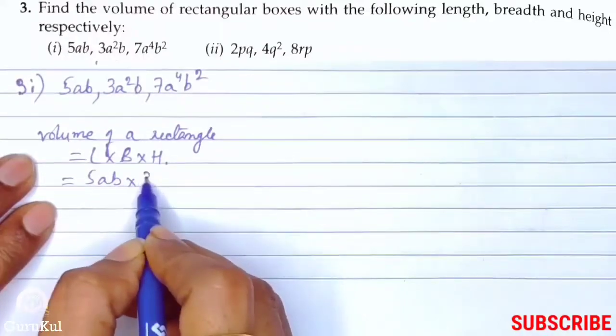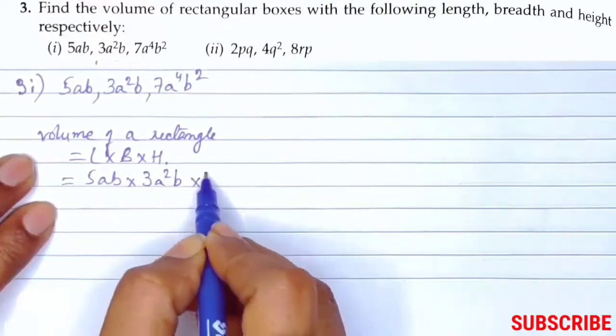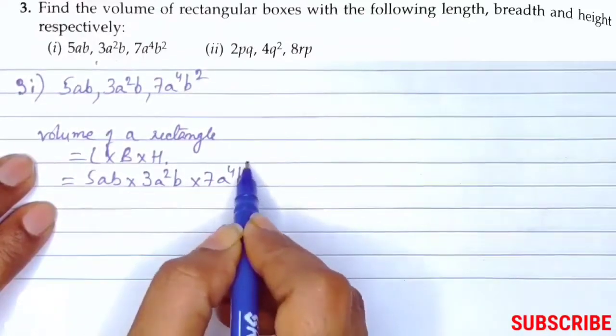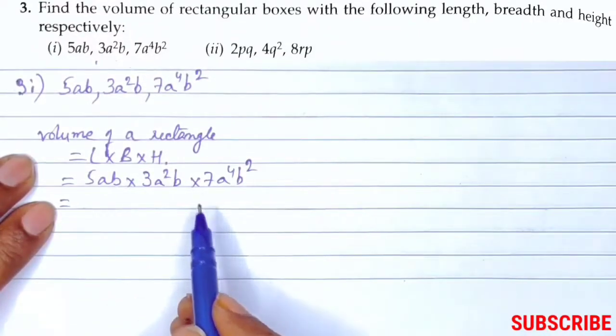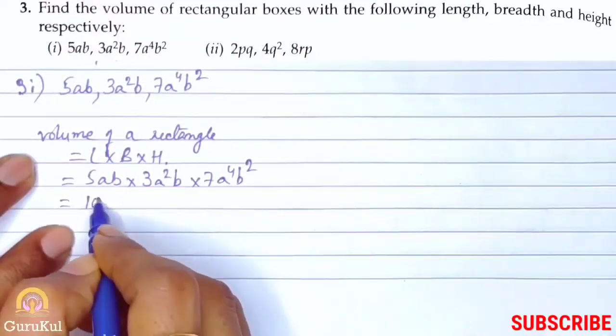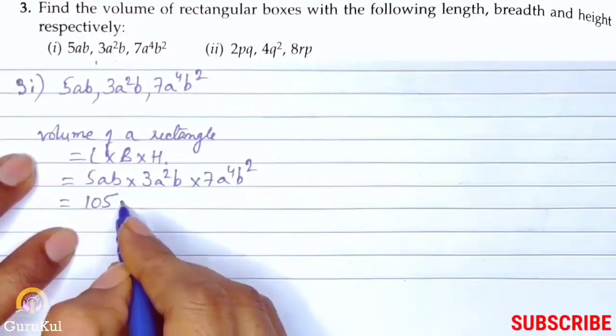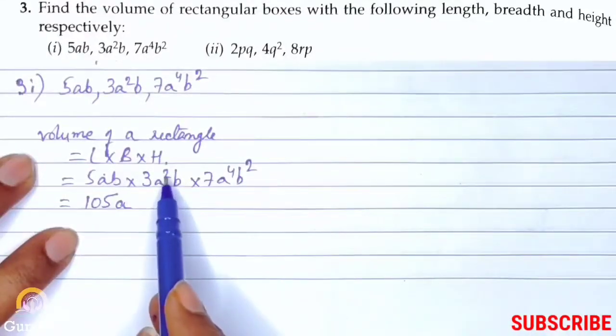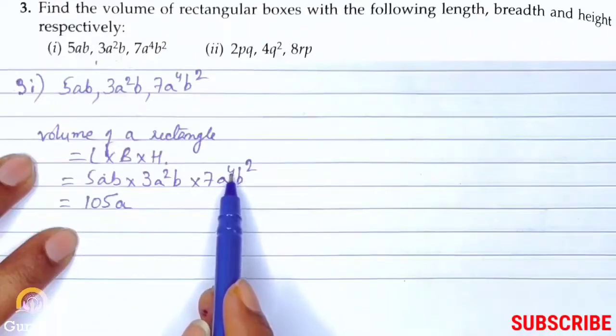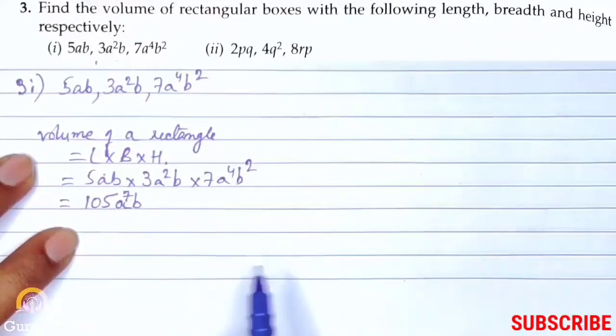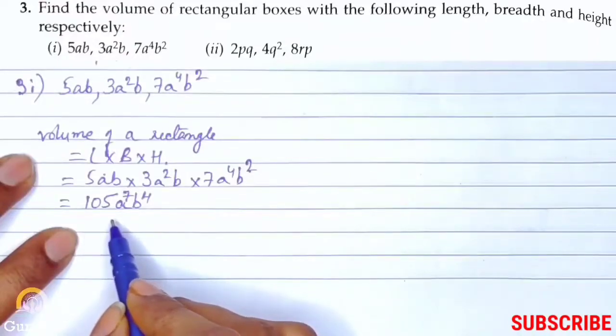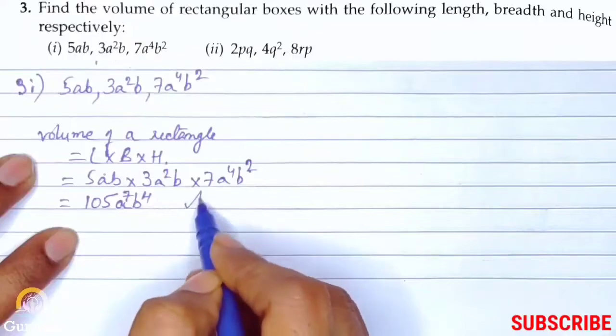Volume of a rectangle is length into breadth into height. So 5ab into 3a square b into 7a to the power 4 b to the power 2. So 5 times 3 is 15, 15 times 7 is 105. Now let's deal with a: a to the power 1, a to the power 2, a to the power 4. So 4 plus 2 is 6, 6 plus 1 is 7, so a to the power 7. Then comes b: b to the power 2, 1 and 1, that becomes b to the power 4. So the answer is 105a to the power 7, b to the power 4.